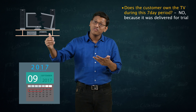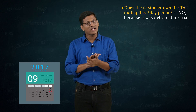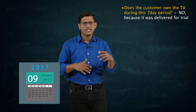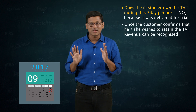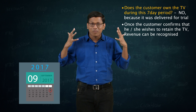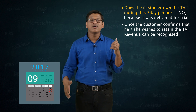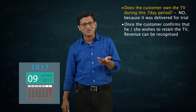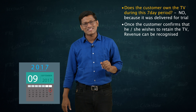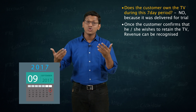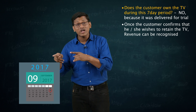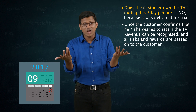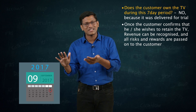If one week is over and you confirm to the shopkeeper that you like the TV and want to keep it, at that moment the shopkeeper feels the sale is made. From that moment, you also feel it is your TV — because until now you had an option to accept or not accept it. But now that option is gone. You have confirmed, and the TV becomes yours.